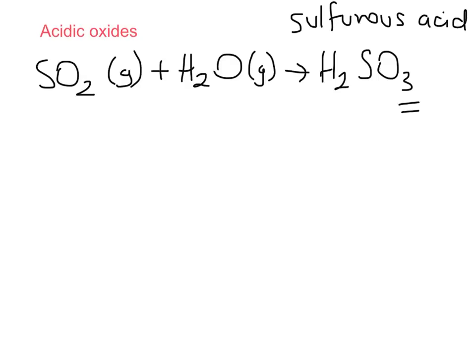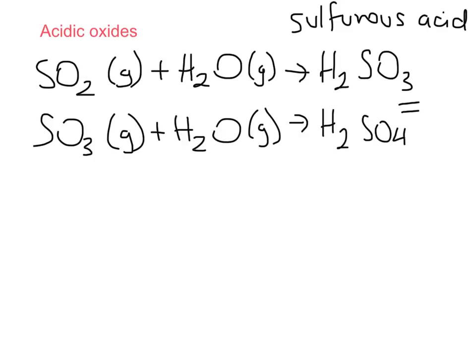Now if we had SO3 gas, this one is more common in our atmosphere. It's actually responsible for acid rain. So when this occurs in our atmosphere we're actually getting H2SO4 which is what you're familiar with, and that's sulfuric acid.